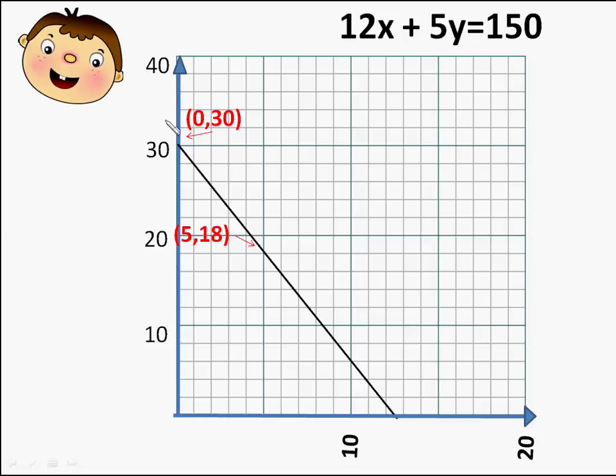And all the points on this line solves the linear equation of two variables. So it has infinite number of solutions like (0,30) which is taking 0 apples and 30 guavas, or (5,18) which is taking 5 apples and 18 guavas. All will be equal to 150 rupees.